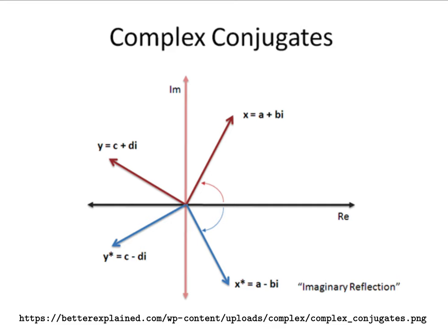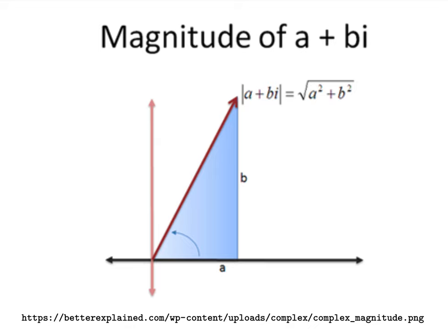The next operation we'll consider is complex conjugates. If we have a complex number a plus bi, we define its complex conjugate as the reflection over the x-axis, so a plus bi reflects to become a minus bi. Finally, the magnitude of a complex number: since we view complex numbers as points in the plane, the magnitude is the length of the vector, which is the square root of a squared plus b squared.